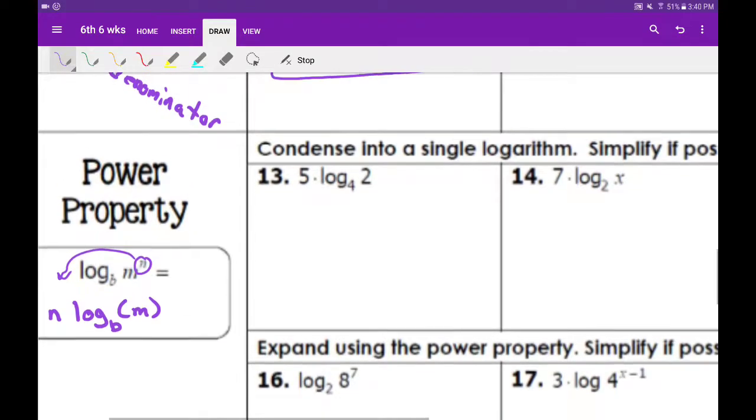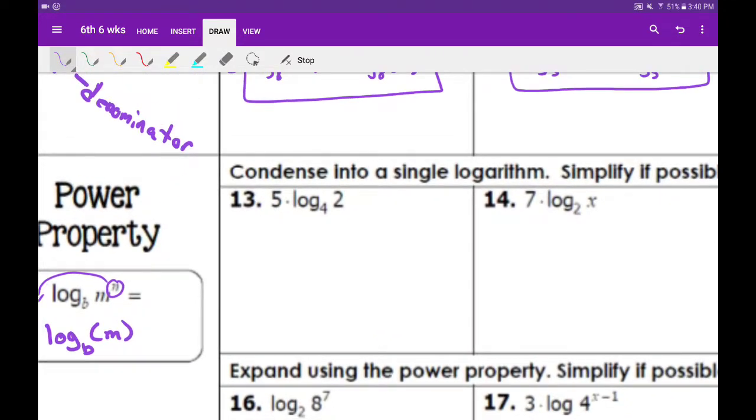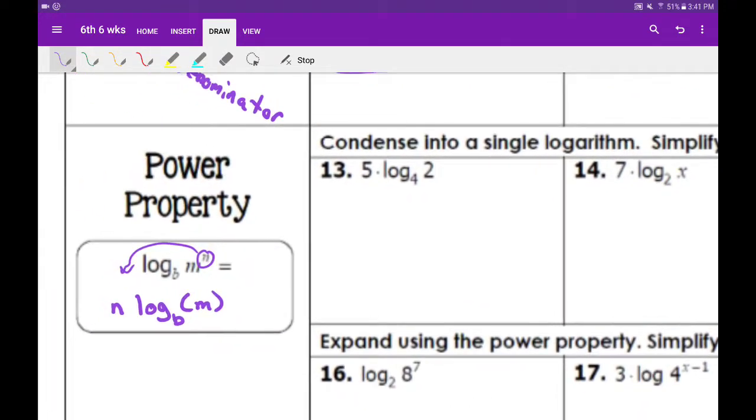Very easy. So on this one when we're condensing it, we're going to throw anything in front of the log into the power, and when we expand it we take the power down and throw it in front of the log.